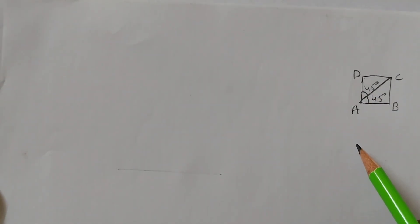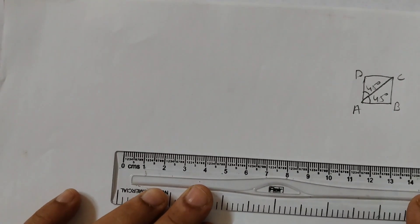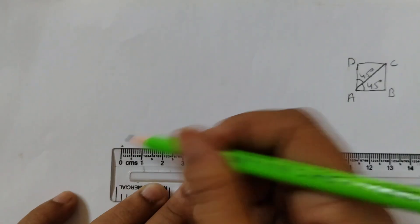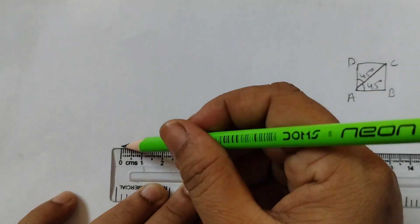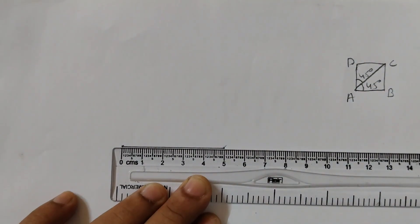First take a ruler and draw a line segment of any length. I am taking 5 centimeters here. Zero, five, and join the points. Now we know this is 5 centimeters. You can take any length.